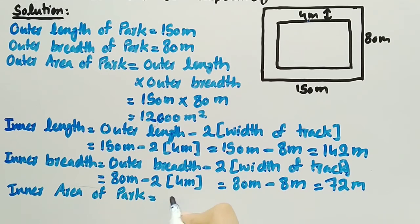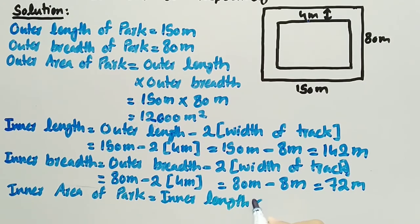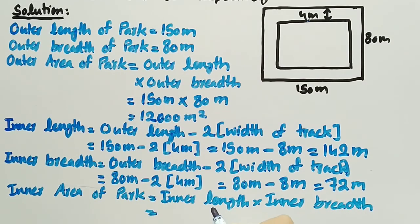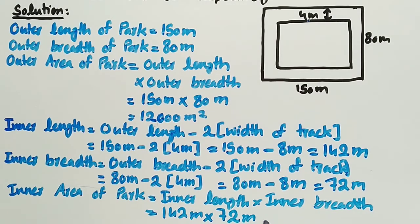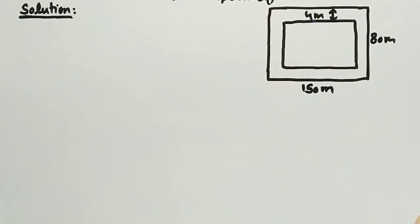Now we will find the inner area of the park, which is equal to inner length multiplied by inner breadth. Substituting the values, inner length is 142 meter multiplied by inner breadth is 72 meter, and multiplying these two we get 10,224 meter square. So inner area of the park is 10,224 meter square.